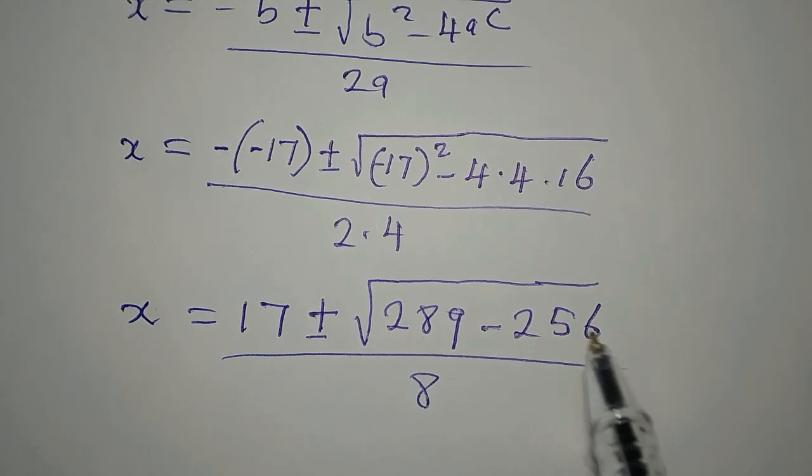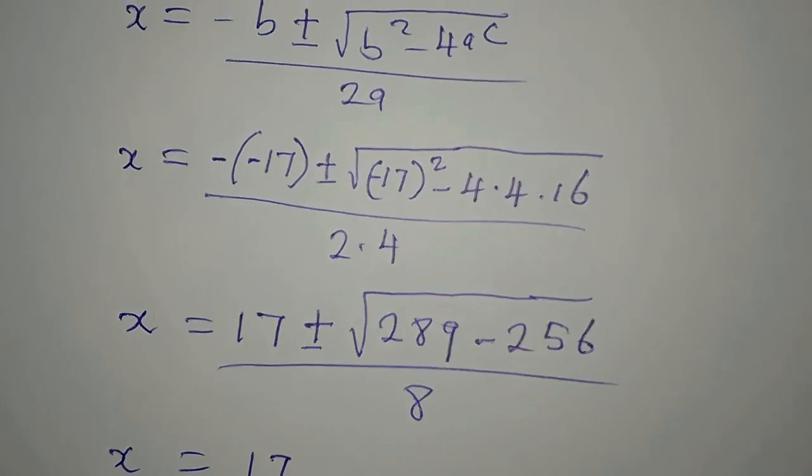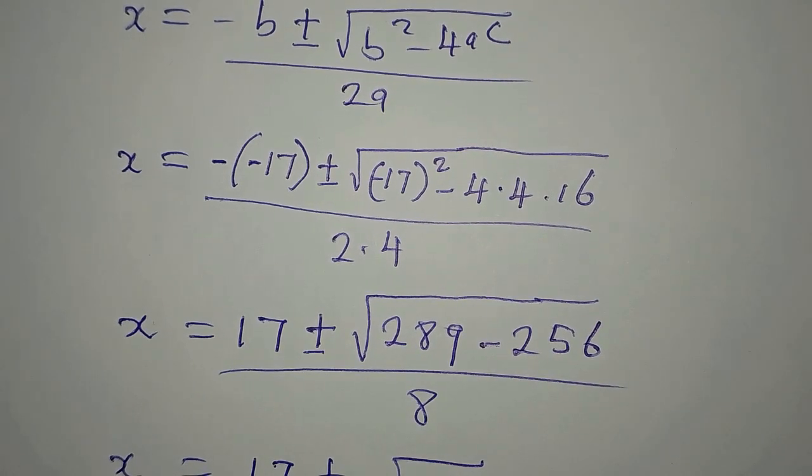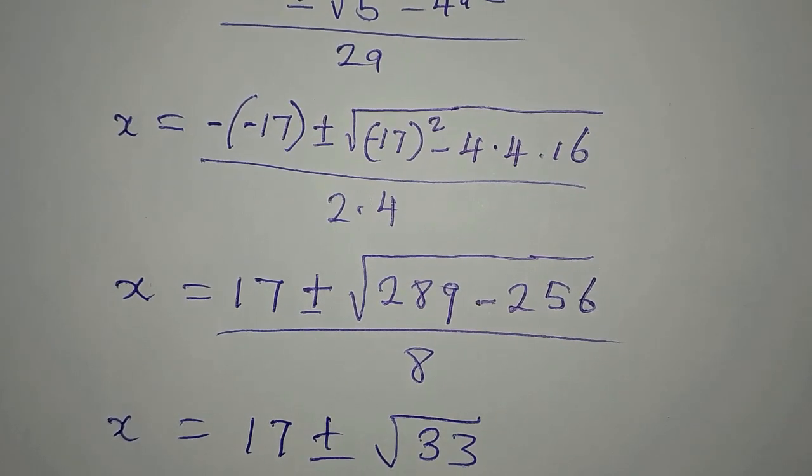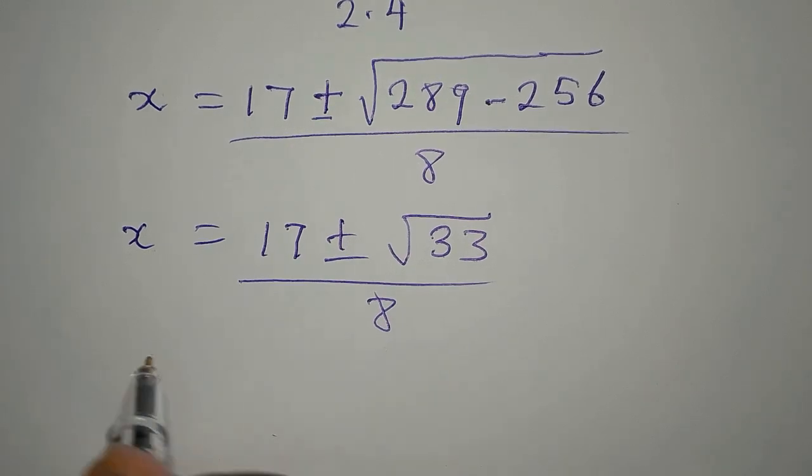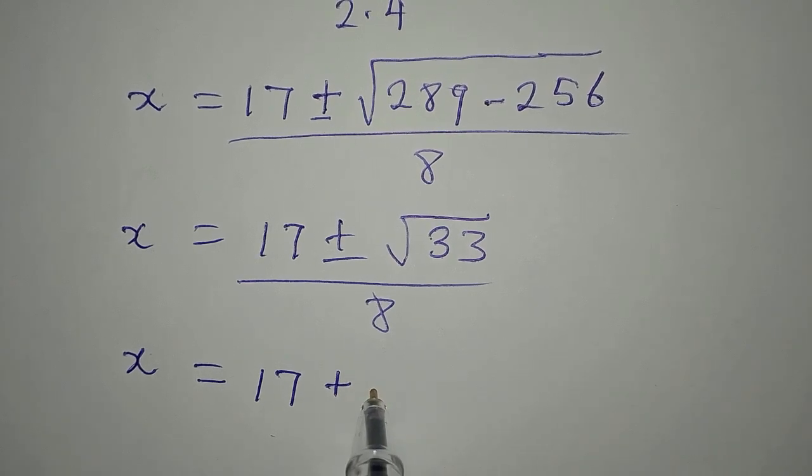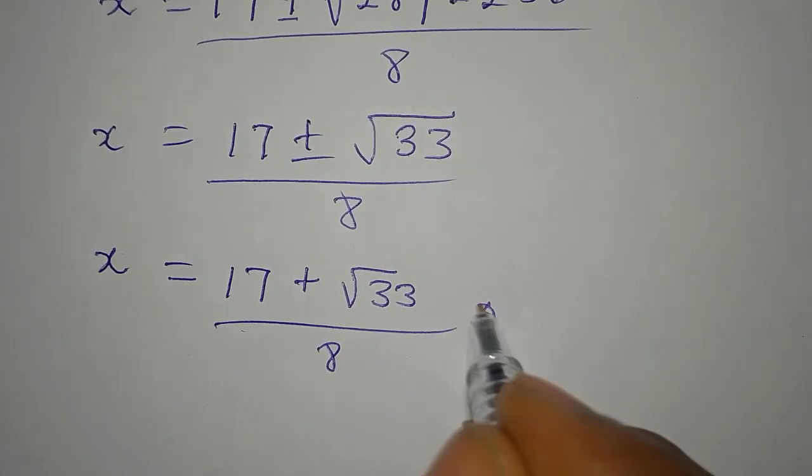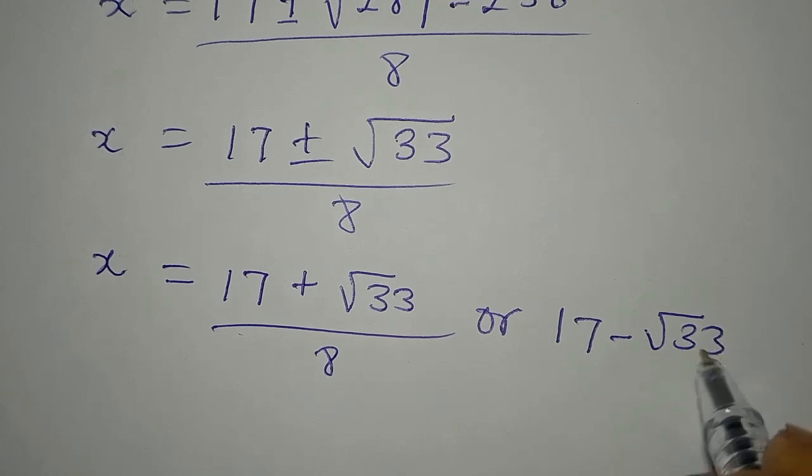Because this is a perfect square and this is also a perfect square, they will find the square root of this and this but that would be wrong. So we have 17 plus or minus, then you subtract this and that will give you 33, then divide by 8. This equally means that our x is equal to 17 plus square root of 33 over 8, or 17 minus square root of 33 over 8.